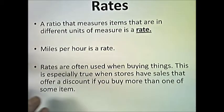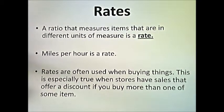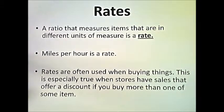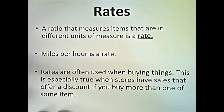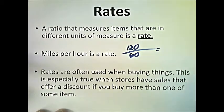Something else we'll talk about is rates. A rate is a ratio that measures items in different units of measure. A good example is miles per hour. Say you're on a long trip 120 miles from your destination and you're traveling at 60 miles an hour — one unit is mileage, another is time. Traveling at 60 miles per hour, it would probably take you about two hours to cover that distance.